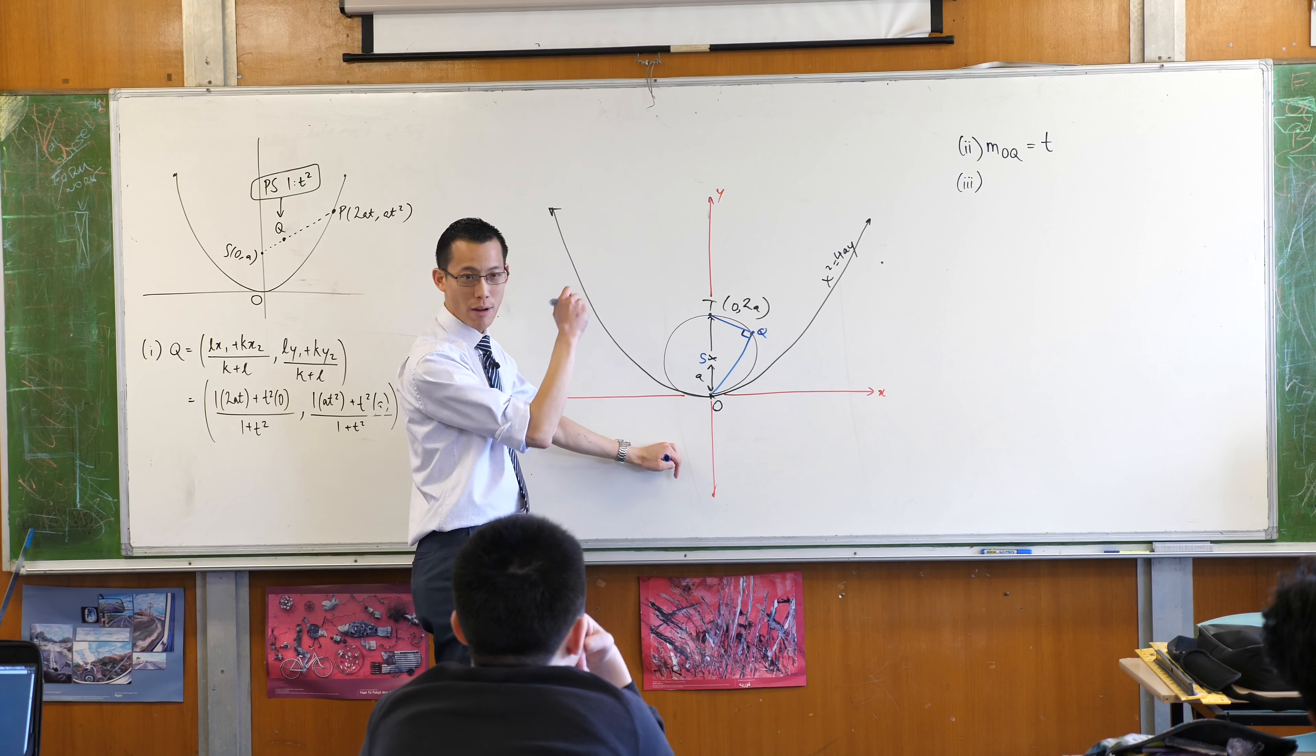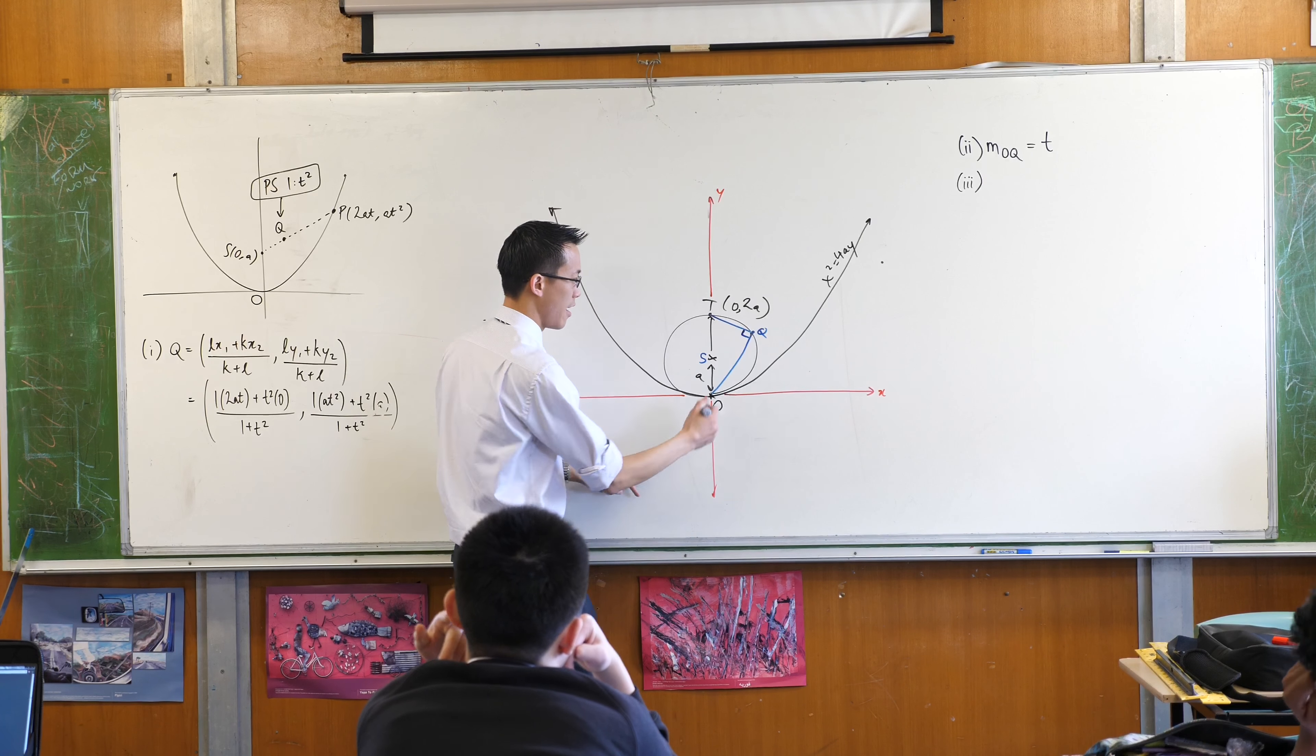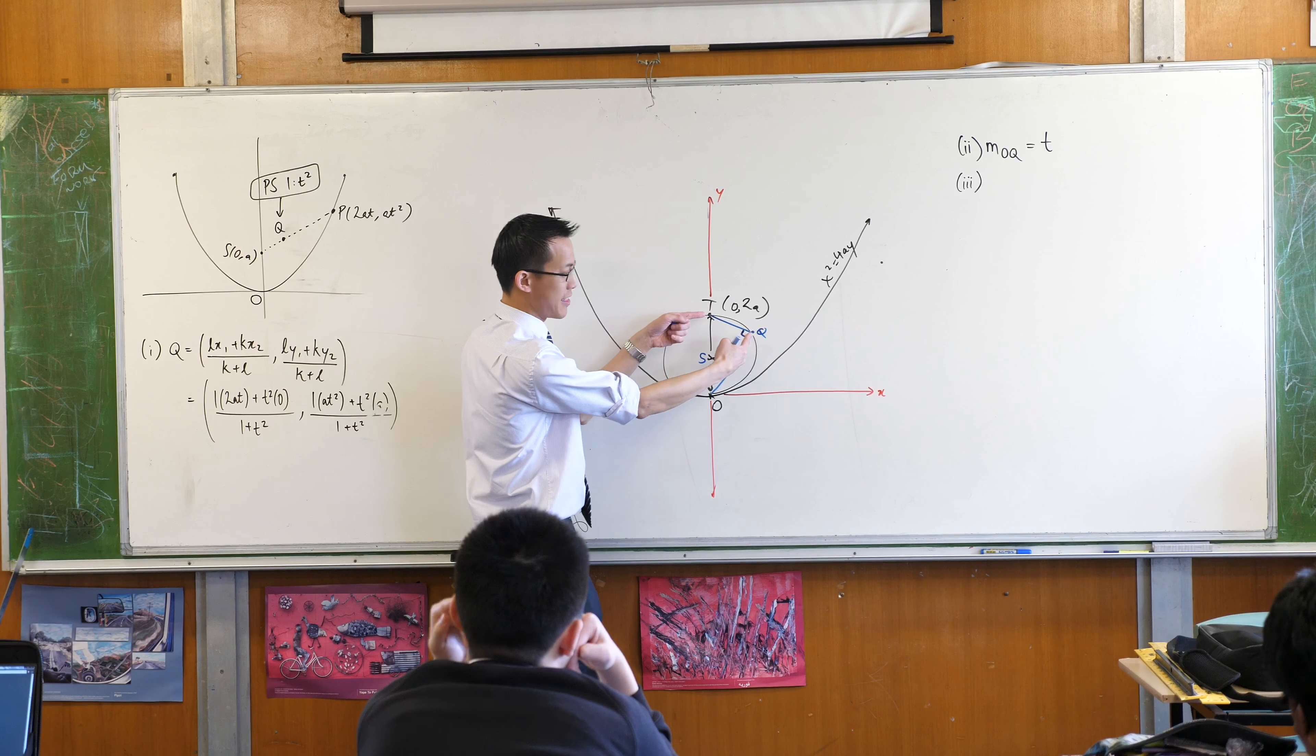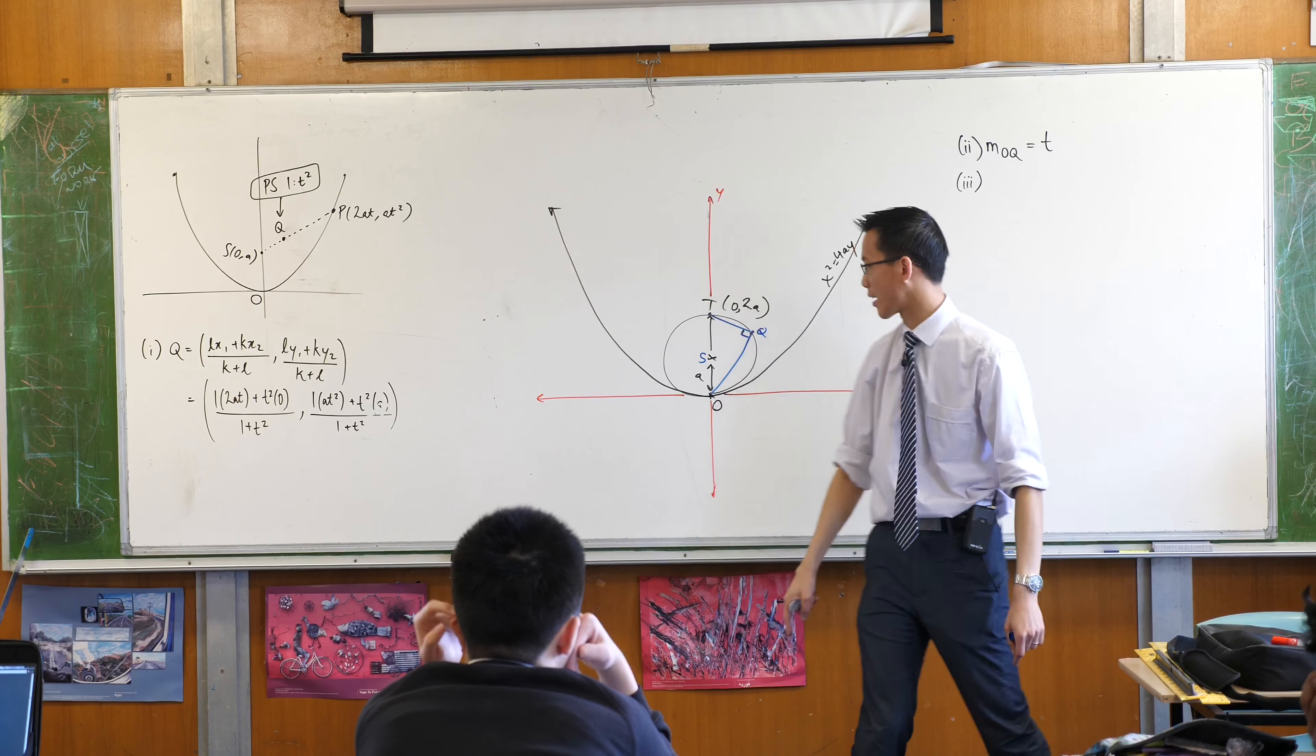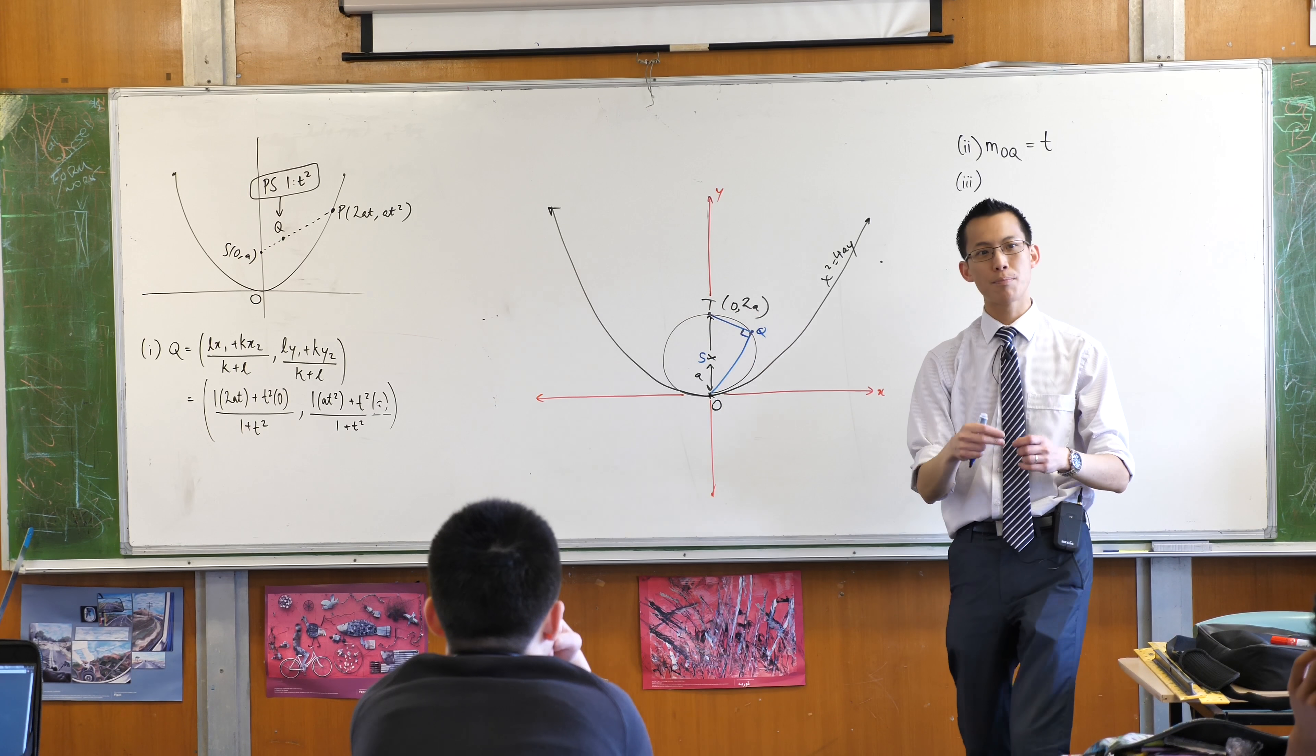Now, I'm drawing that right angle there with sort of tongue-in-cheek because I haven't proved that yet, but that's what I expect to be true. If the gradient of this is T, then I'm expecting that this will be minus 1 over T. So let's prove it. I know the coordinates of this point up here, T, right? But I need to prove it.